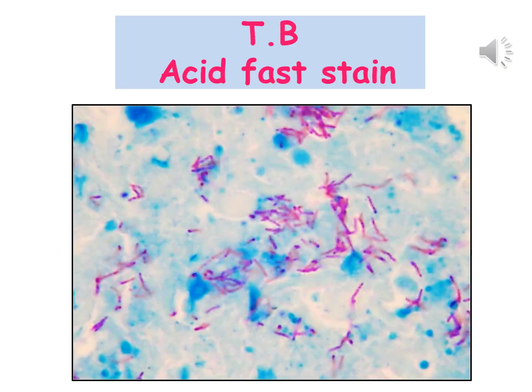This slide reveals the acid-fast stain result. Mycobacterium tuberculosis appears in red to pink color while other cells and the background appear in blue.